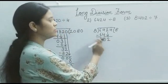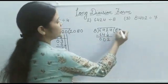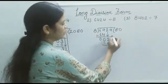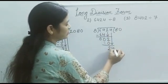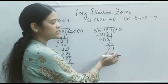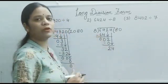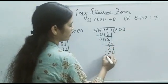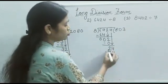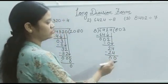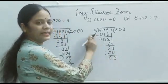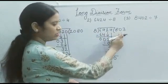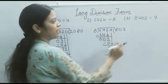Then 2 does not come in the table of 8, so we use 8 zeros are 0. Then 2 minus 0 is 2. Then we bring down the next digit, that is 4, and combined it is 24. And 24 comes in the table of 8 at 3 times — 8 threes are 24. Then 4 minus 4 is 0, and 2 minus 2 is 0. So 8 is the divisor, 6424 is the dividend, 803 is the quotient, and the remainder is 0.